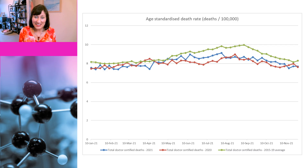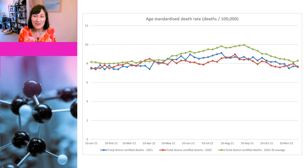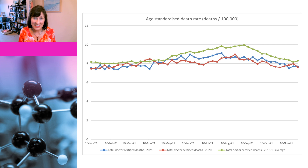When looking at deaths, you can't just look at absolute numbers. You need to look at the death rate because Australia has a growing population — our population is getting bigger. Furthermore, you need to standardise deaths by age because Australia also has an ageing population. And when you do that, you get this graph here, which shows the age-standardised death rate in deaths per 100,000 people.